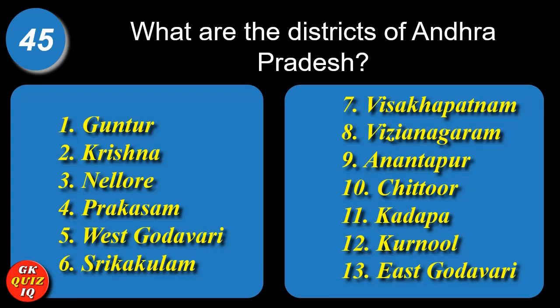What are the districts of Andhra Pradesh? Guntur, Krishna, Nellore, Prakasam, West Godavari, Srikakulam, Visakhapatnam, Vizianagaram, Anantapur, Chittoor, Kadapa, Kurnool, East Godavari.